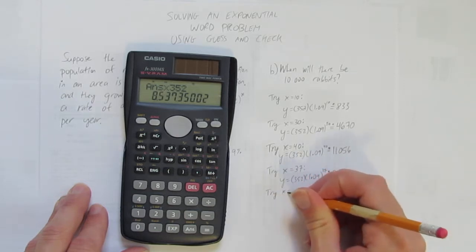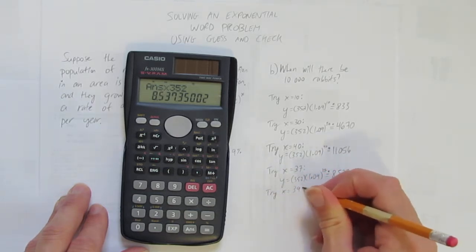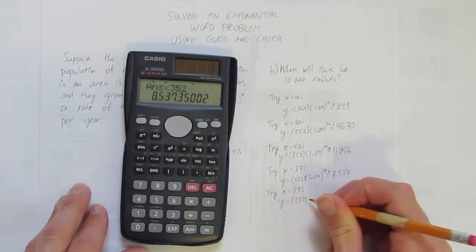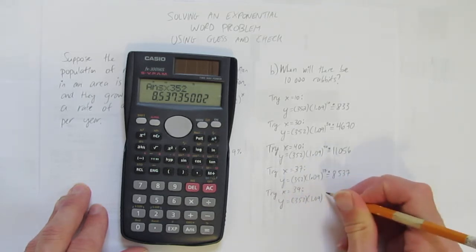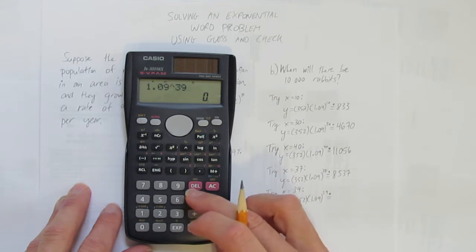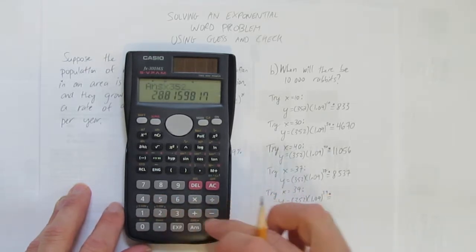I'll try X equals 39, maybe, and see what I get there. Y equals 352 times 1.09 to the power of 39, which will be rounded. 1.09 to the power of 39 equals times 352.